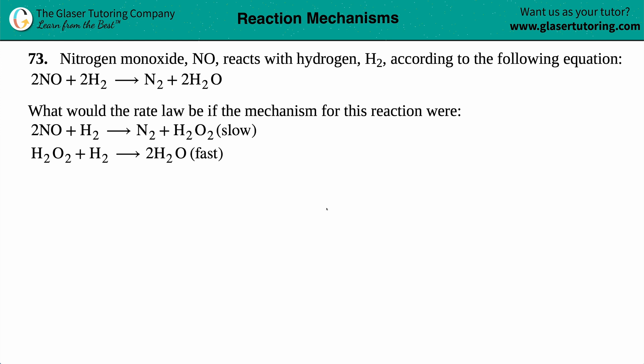Number 73. Nitrogen monoxide, which is NO, reacts with hydrogen, which is H2, according to the following equation. So we got 2NO plus 2H2 yields N2 plus 2H2O.